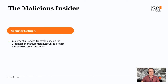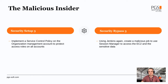So maybe there's another security measure. Let's implement a Service Control Policy on the organization management account to protect these roles on all accounts. Thanks to that, they will not be able to modify the roles. But they can still use Jenkins to access the EC2 session and still access the data, so our secure pipeline is not that secure if the team has admin access to that tool.